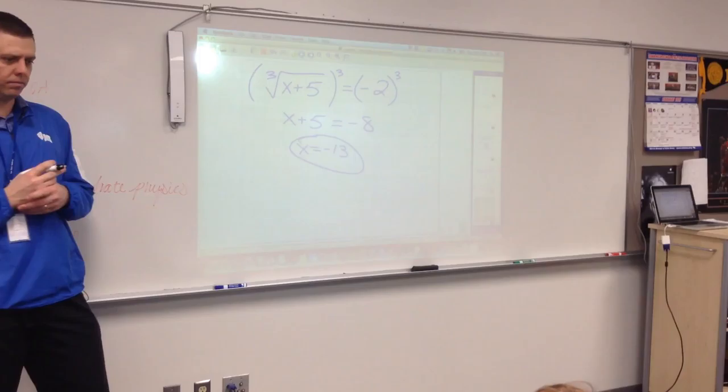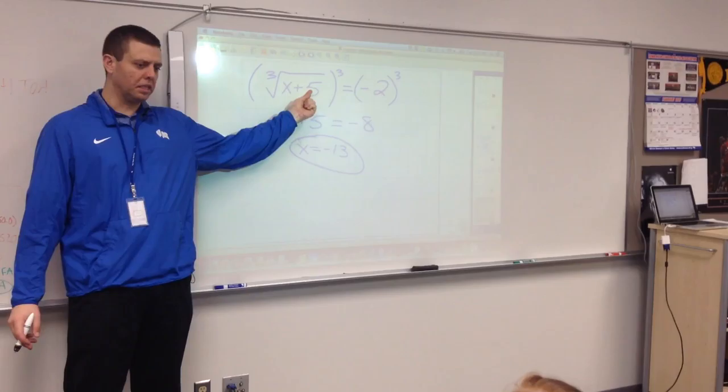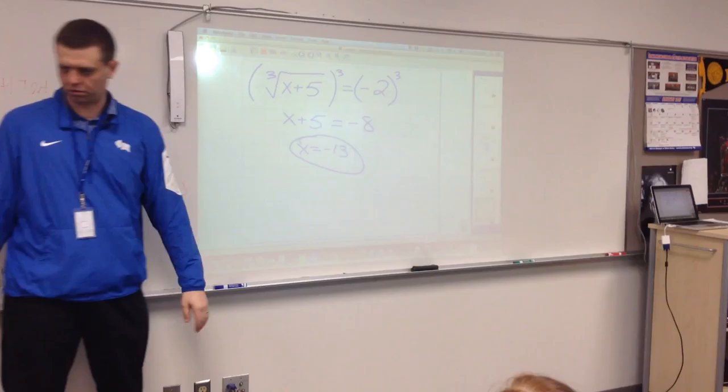Very basic, very simple. Plug your answer back in. Negative 13 plus five is negative eight. Negative eight, the cube root of negative eight is negative two.